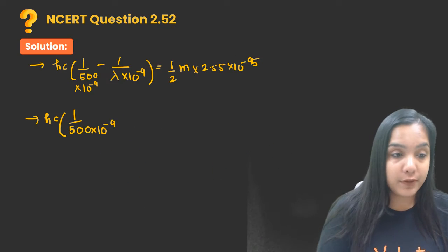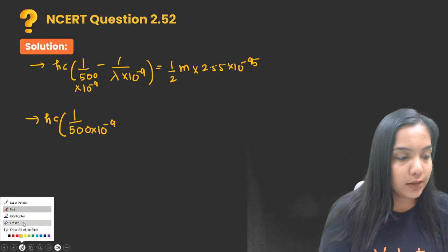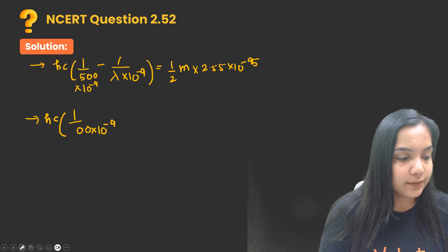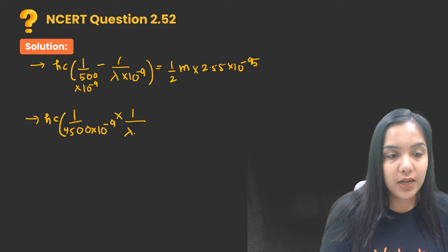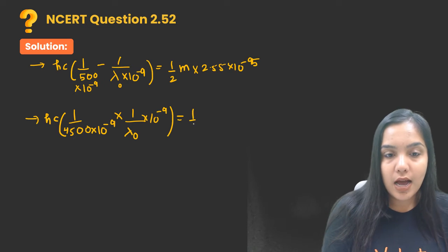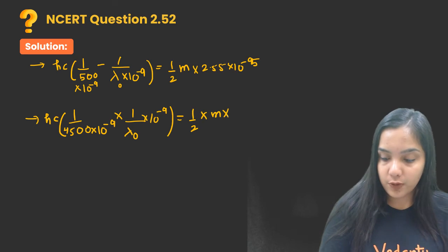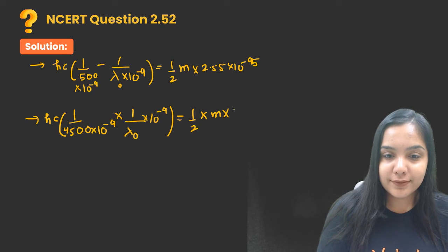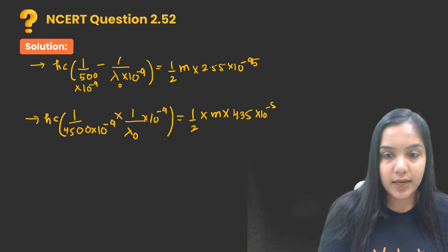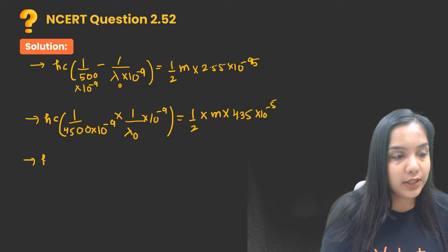What about the second one? That is 450, so I will put 450 here. 450 into lambda naught into 10 raised to power minus 9, half m into what is the v value? 4.35 into 10 raised to power minus 5.